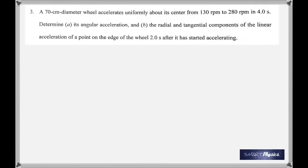In this question, a 70-centimeter diameter wheel accelerates uniformly about its center from 130 rpm to 280 rpm in 4 seconds. Find its angular acceleration and then the radial and tangential components. Once again, you have rotations per minute — you have to change both into rotations per second.